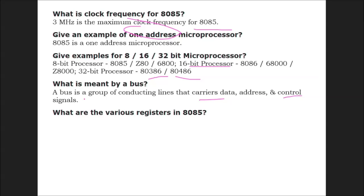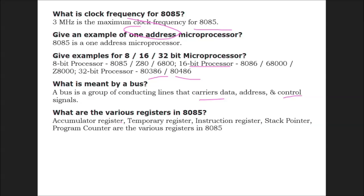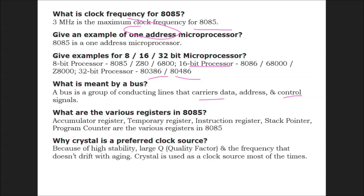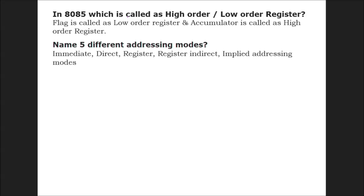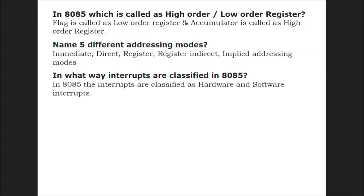What are the various registers in 8085? Accumulator register, temporary register, instruction register, stack pointer, and program counter are the various registers in 8085. Why crystal? We've already discussed crystal. In 8085, which is called the high order/low order register? Flag is low order, accumulator is high order. Name five different addressing modes: immediate, direct, register, register indirect, and implied. In what way are interrupts classified in 8085? In 8085, the interrupts are classified as hardware and software interrupts.